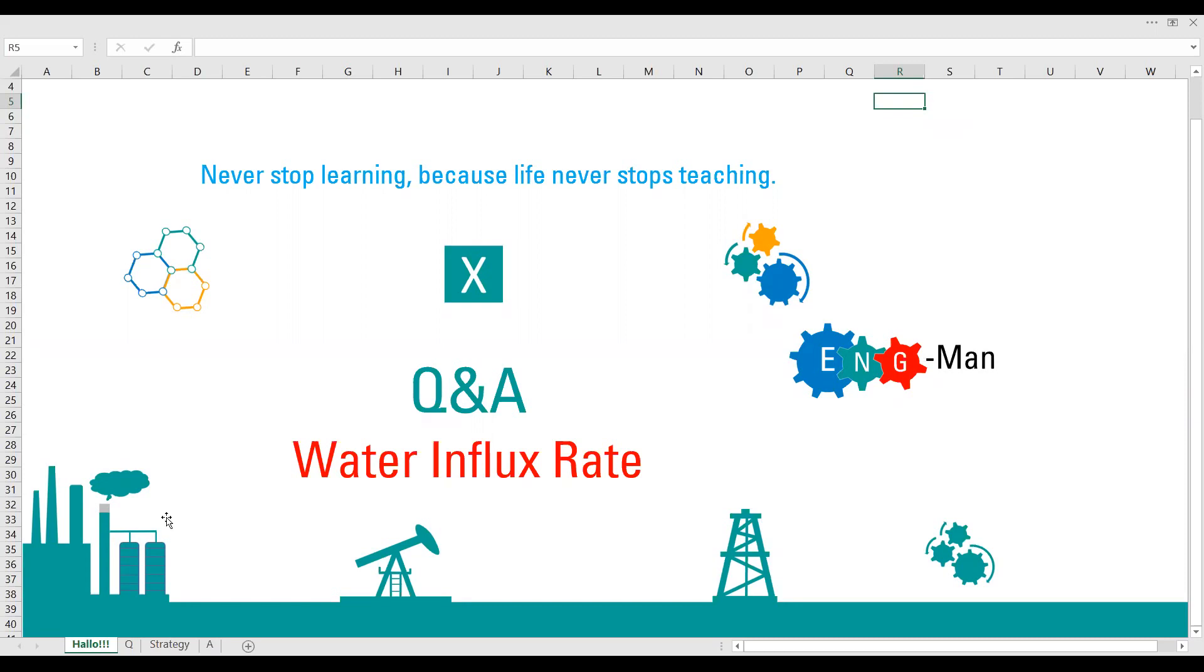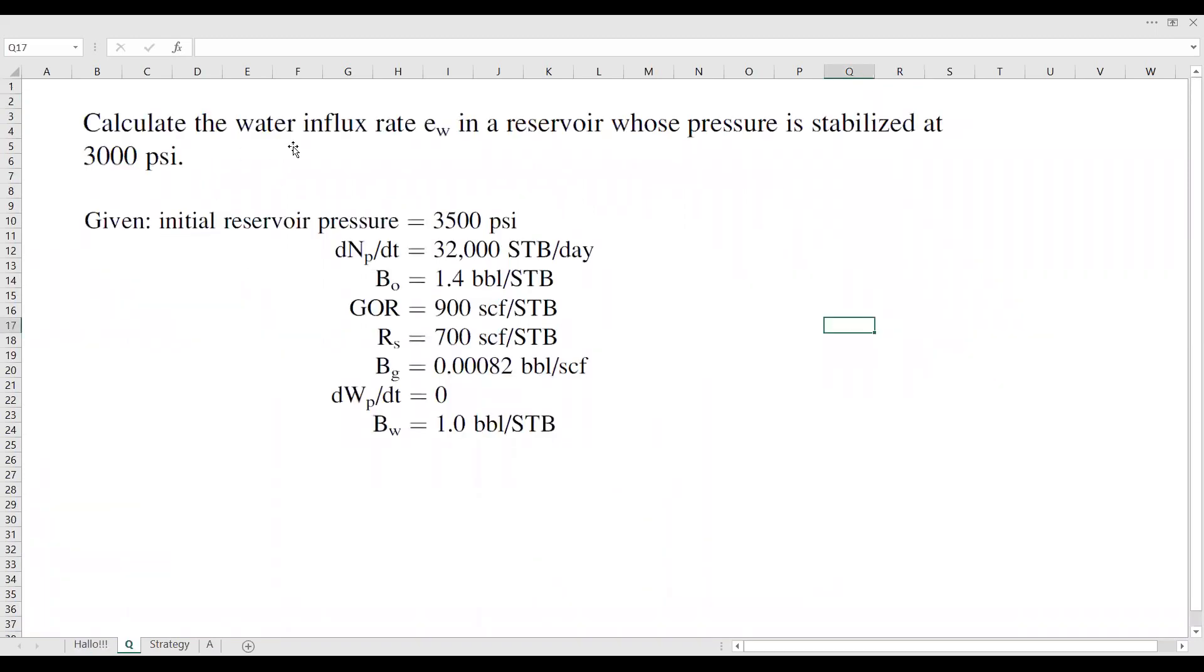Okay, let's go straight to the question, and this is the question we have. Calculate the water influx rate in a reservoir whose pressure is stabilized at 3,000 psi, and we are also given some data.